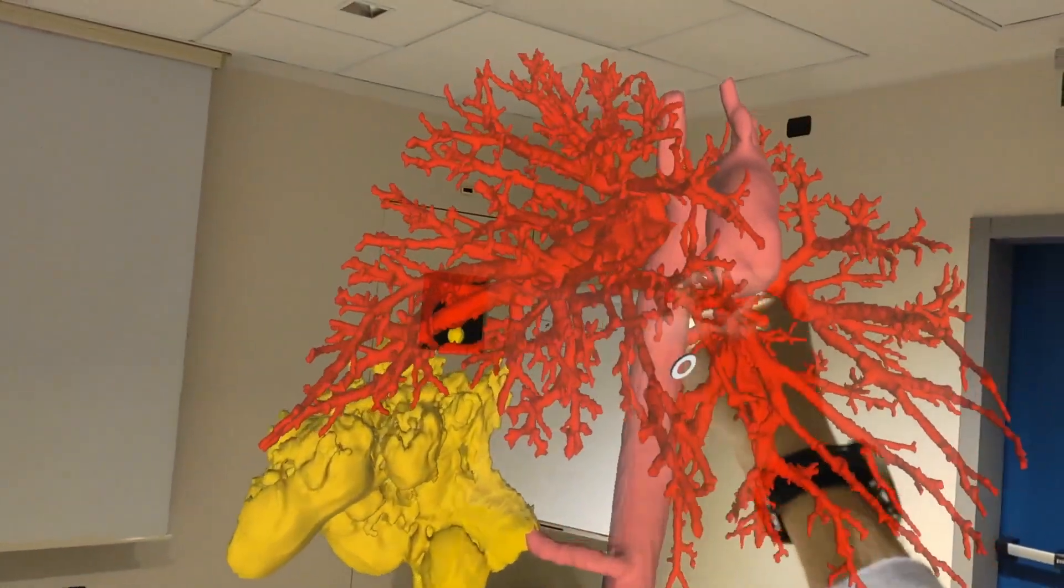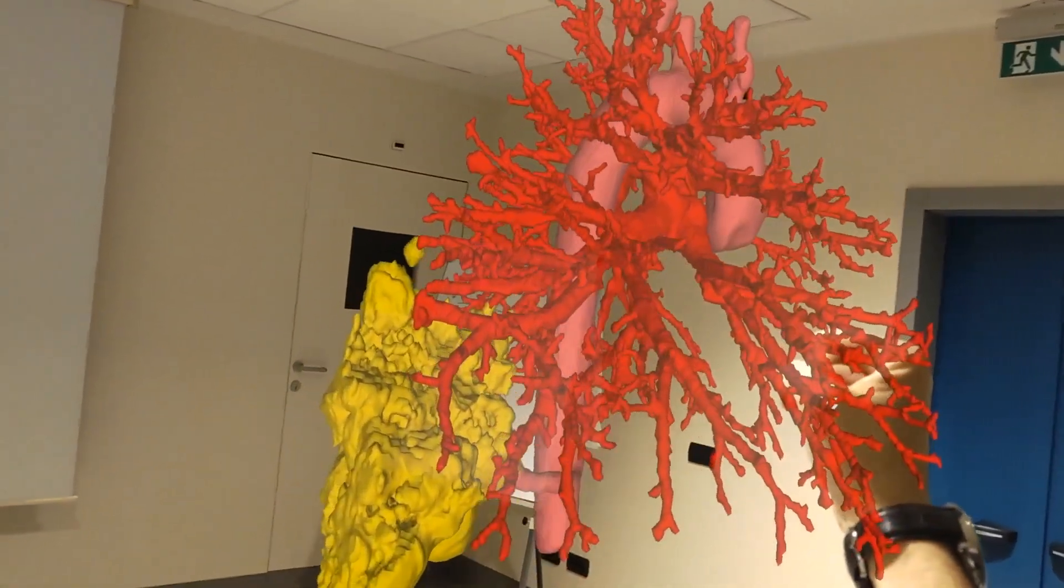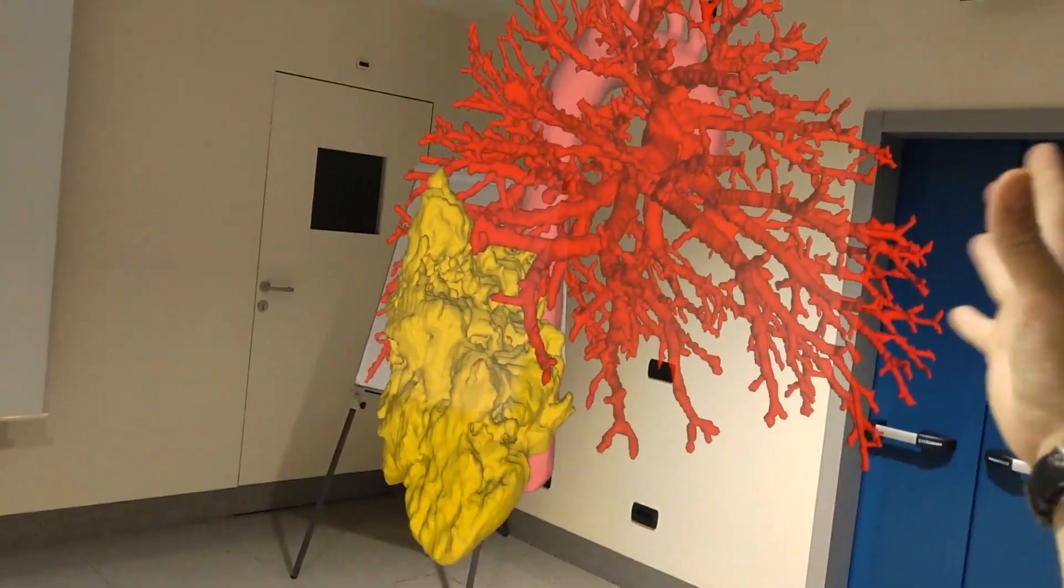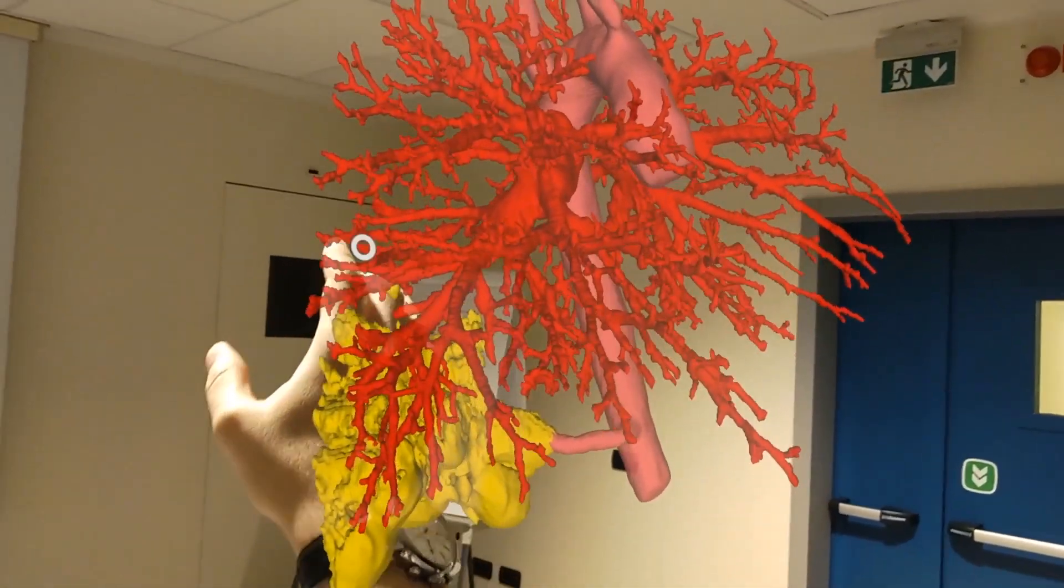You can clearly see the feeding artery from the aorta, pulmonary arteries here in red and veins in blue, as well as the whole tracheobronchial tree in light blue.